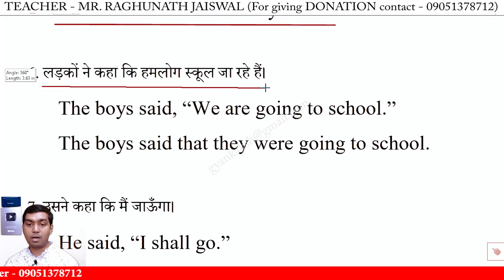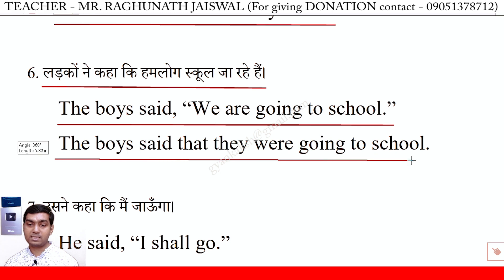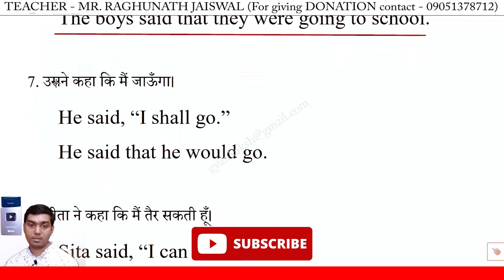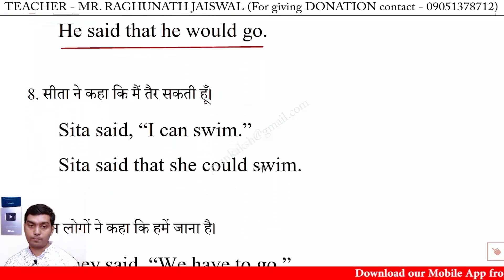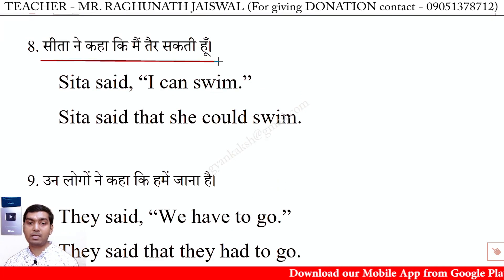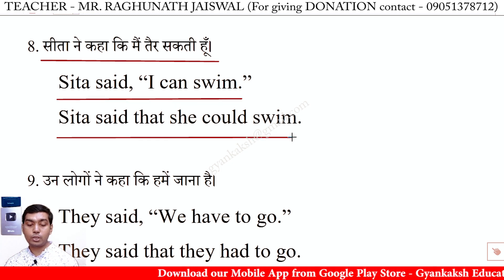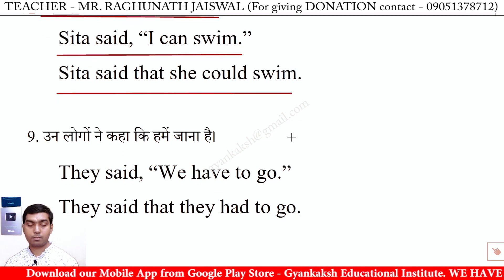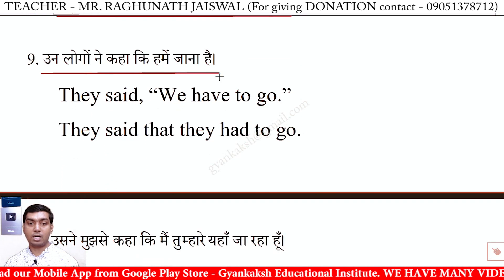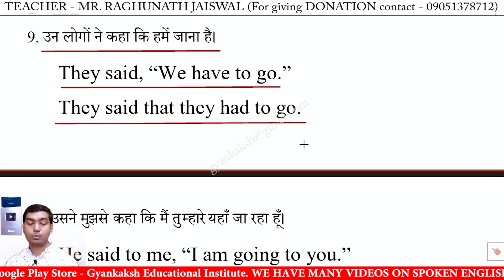Ladkon ne kaha ki hum log school ja rahe hain. The boys said, 'We are going to school.' The boys said that they were going to school. Us ne kaha ki mein jaunga. He said, 'I shall go.' He said that he would go. Sita ne kaha ki mein tair sakti hoon. Sita said, 'I can swim.' Sita said that she could swim. Un logon ne kaha ki hume jaana hai. They said, 'We have to go.' They said that they had to go.